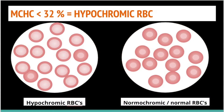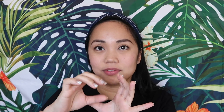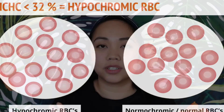For MCHC, if the value is less than 32%, your cells might be hypochromic. You check the peripheral blood smear and look at the central pallor. The central pallor on an RBC should be small, like a small hole in a donut. But if the central pallor is very large — almost as big as the entire RBC — there's not much hemoglobin in there, meaning the cells are hypochromic.